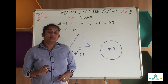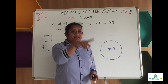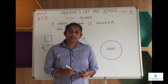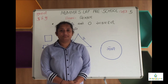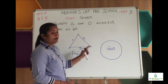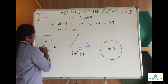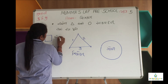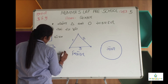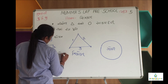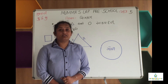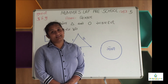ગોળ, ચોરસ, લંબ ચોરસ, ત્રિકોણ — આ બધા આકાર સમજ પડ્યા ને? તો આ આકારો દોરીને પ્રેક્ટિસ કરો. (Circle, square, rectangle, triangle — did you understand all these shapes? Practice drawing these shapes.)